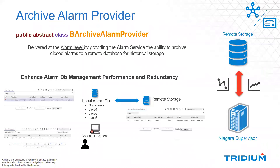So what did we come up with to solve this problem? That's where we introduced the archive alarm provider. We're going to direct this towards the developer community — we'll talk about the abstract class we've created. This is part of the public API. It's an abstract class called BArchiveAlarmProvider, and this abstract class is the architecture to help you create your own implementation. What this will do is give you access at the alarm level — the alarm service — and give it the ability to archive a closed alarm to a remote database for historical storage.